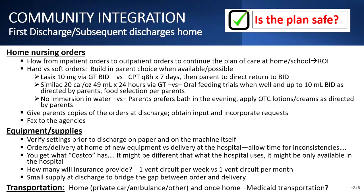How many will insurance provide? With something like vent circuits, you might get one a week or one a month — and one a month is a lot and not enough. That's where you have to work with insurance to make it different. Give them a small supply when they go home to bridge the gap — nothing more than two or three days' worth of a couple of items.